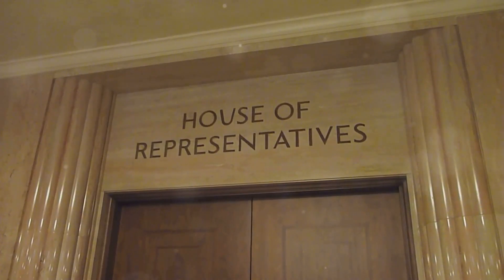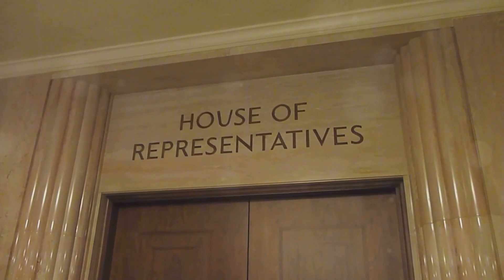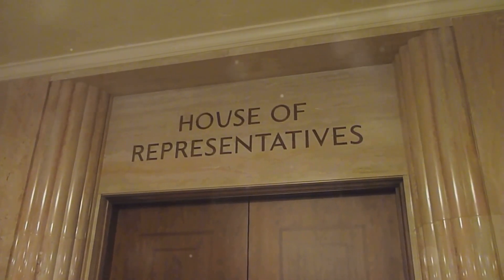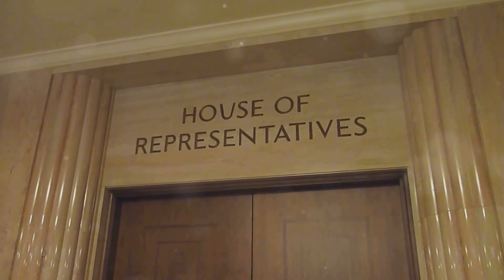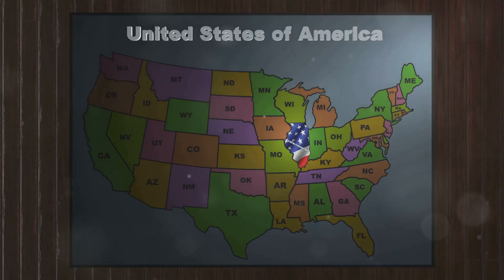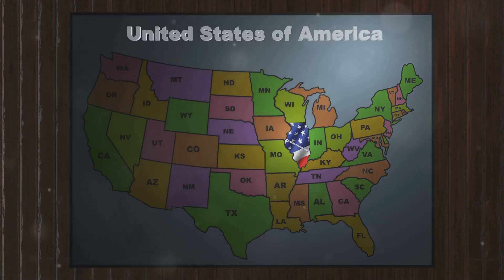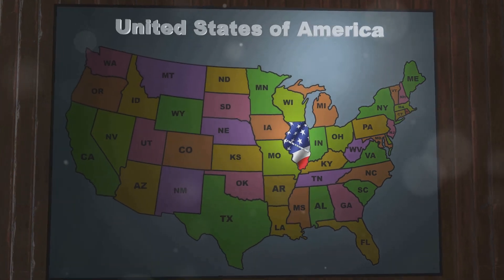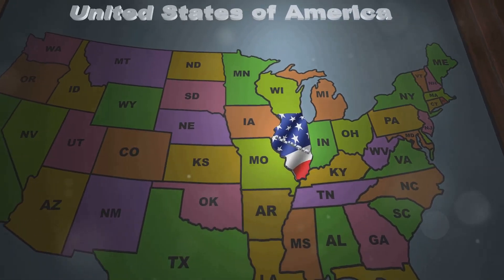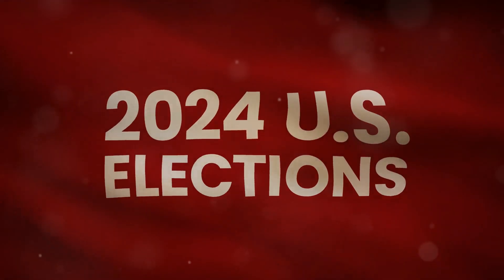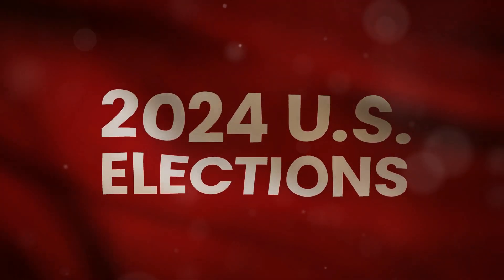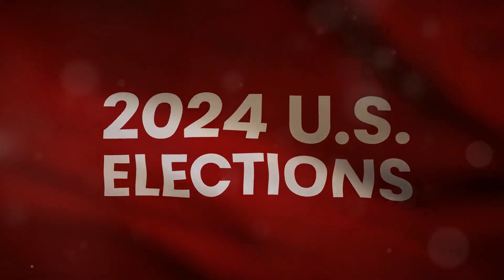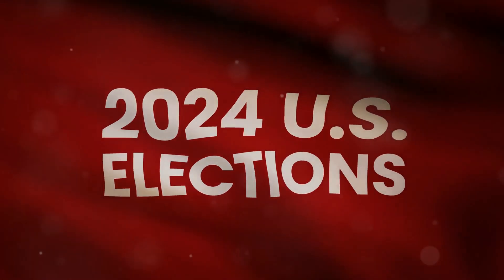The House of Representatives, on the other hand, has 435 members. The number of representatives each state has is based on its population. Representatives serve two-year terms, with all seats up for election every two years.